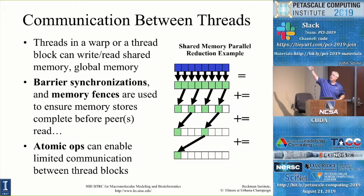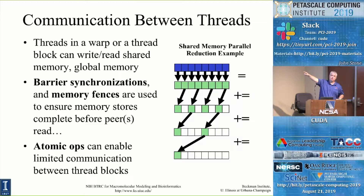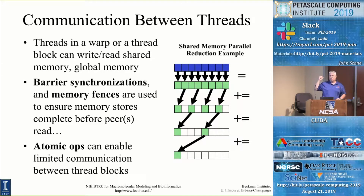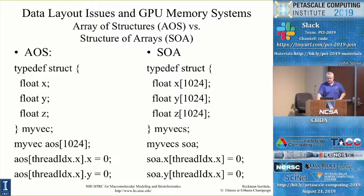In practice, if you want to do a parallel reduction, you do this within a thread block. The zeroth thread of the entire thread block takes that final reduced result and uses an atomic operation — like an atomic add — to contribute to a global sum that all thread blocks are contributing to, just as an example.